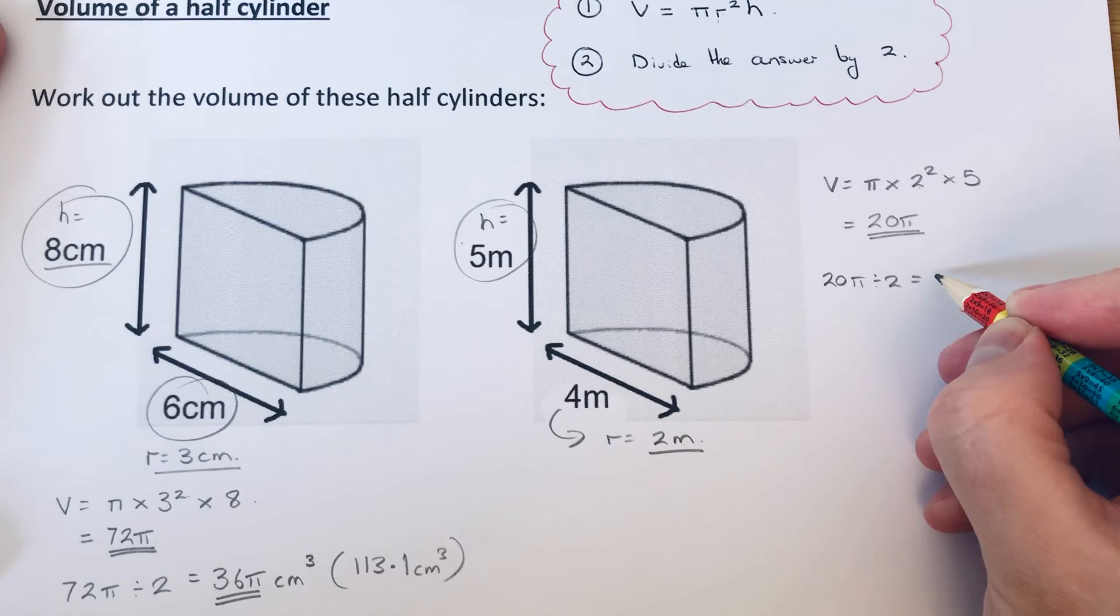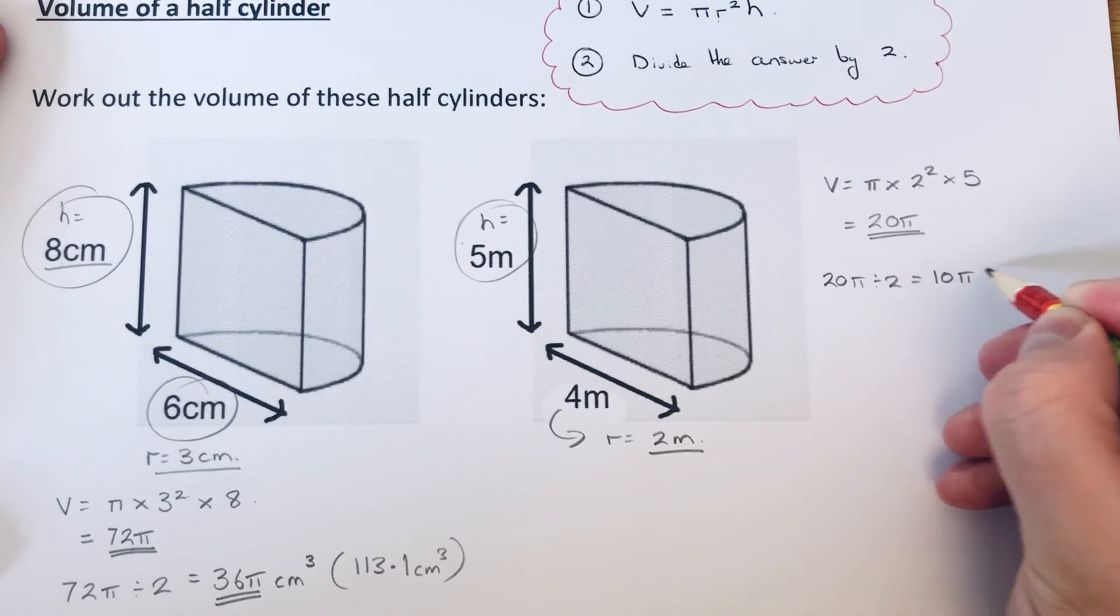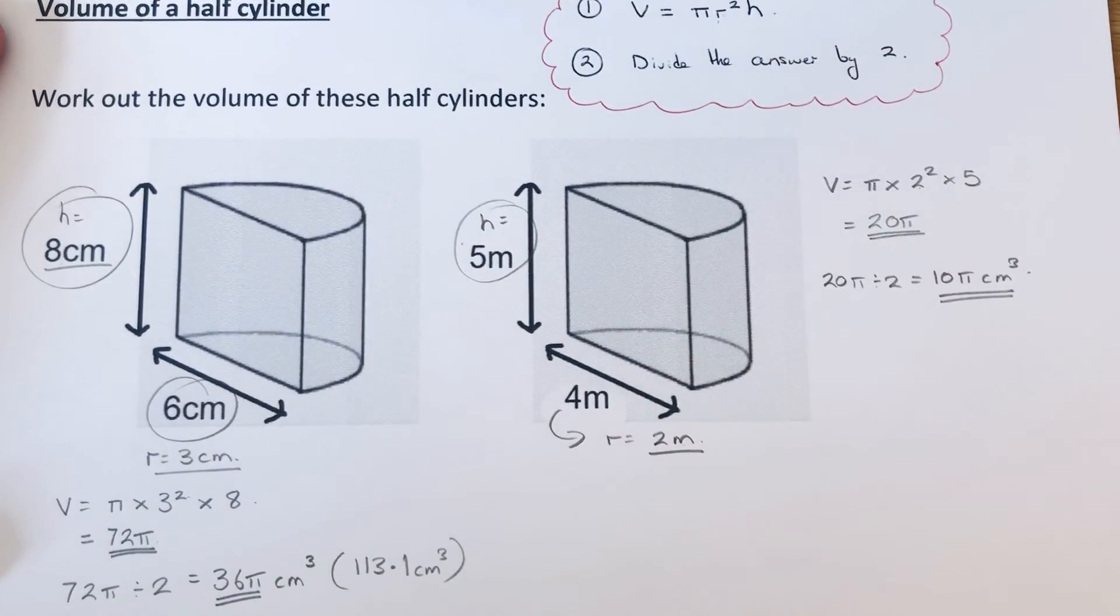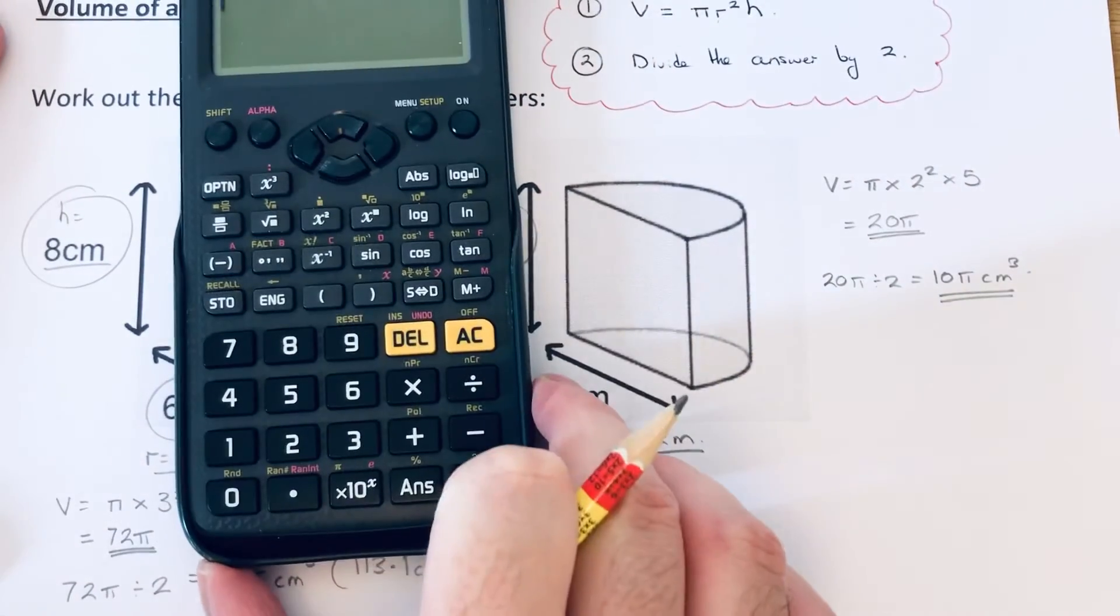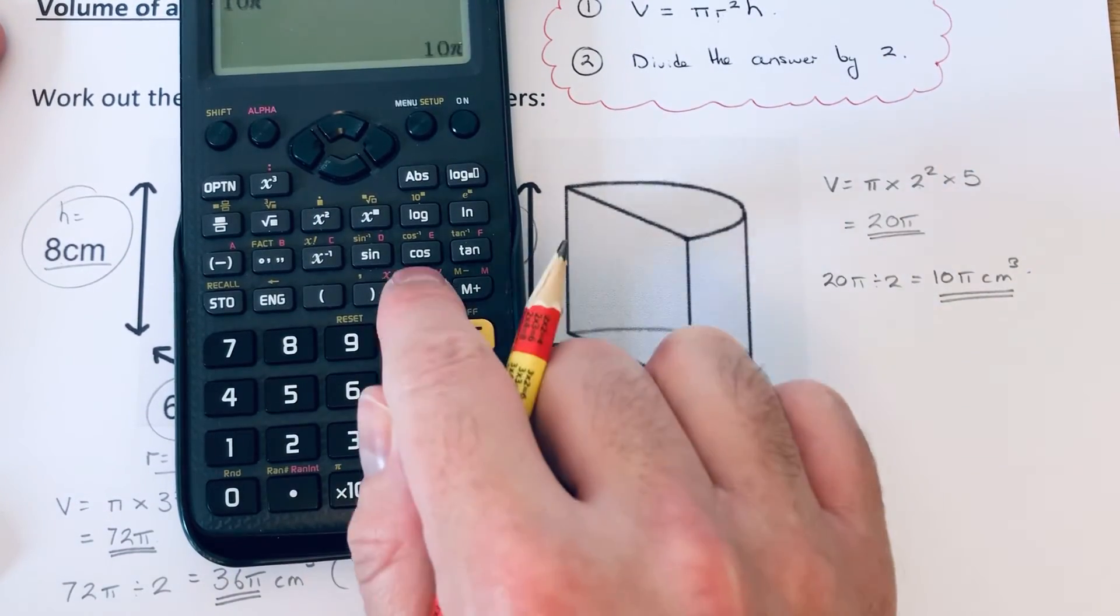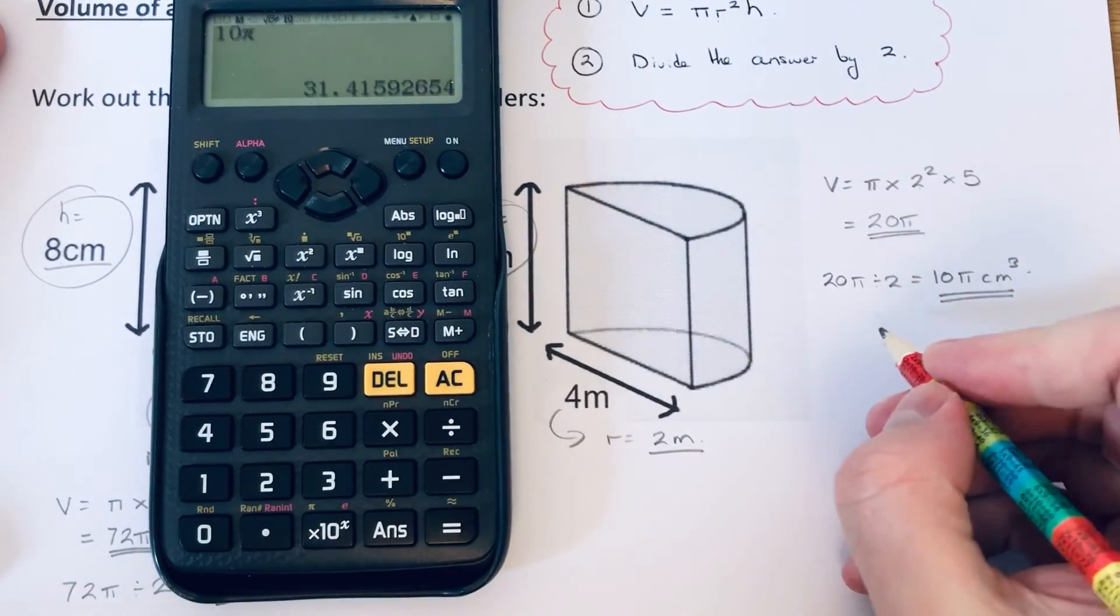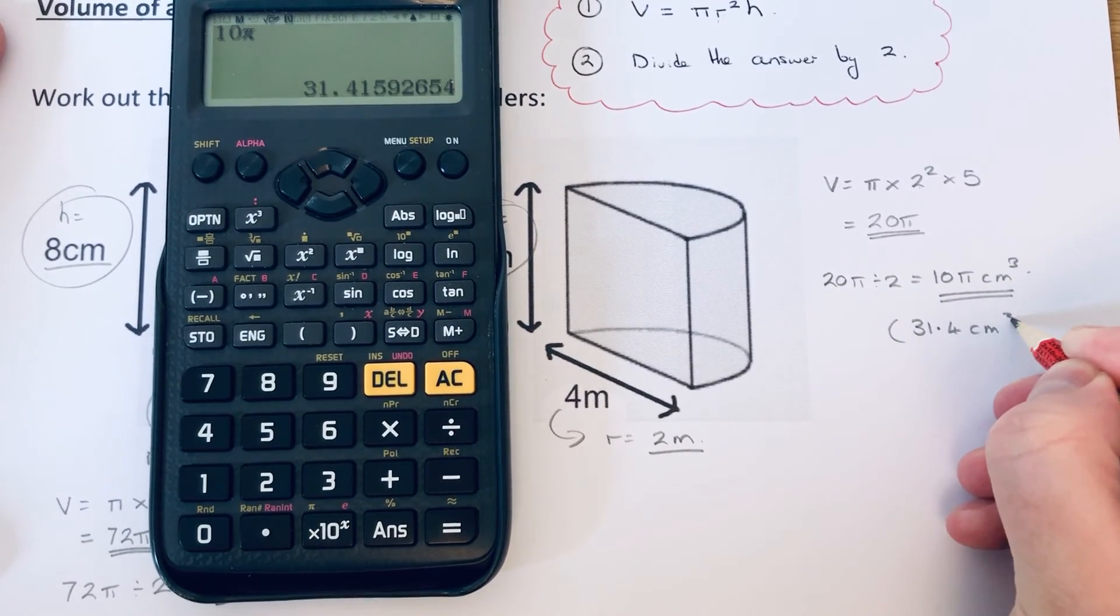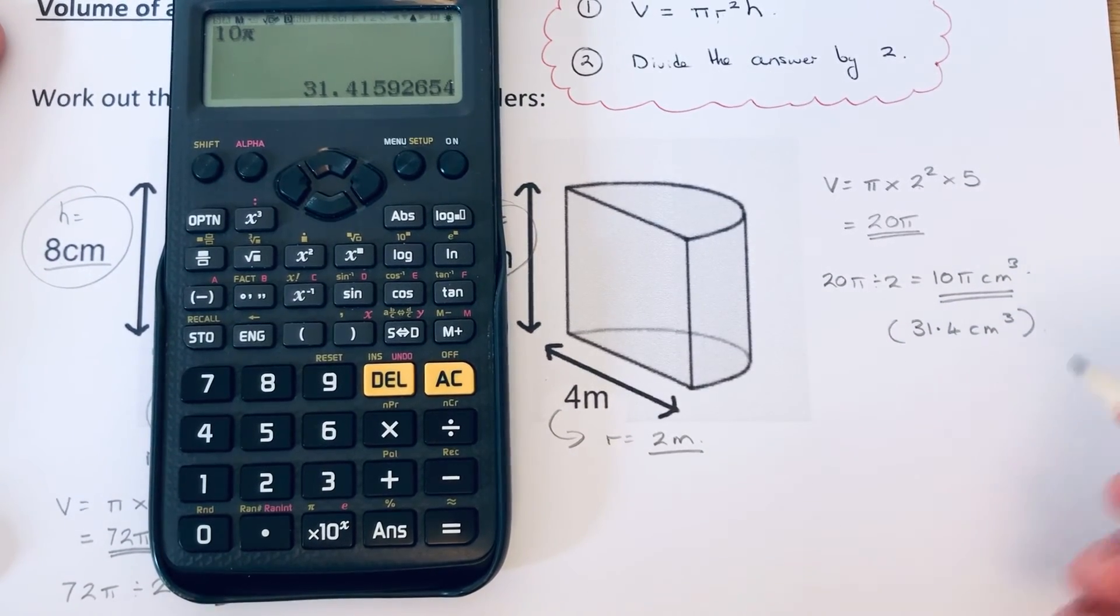So 20π ÷ 2 is 10π. That is our final answer. If you want it as a decimal, just type 10π on your calculator and equals, and we get 31.4.